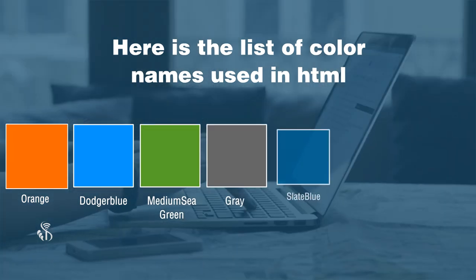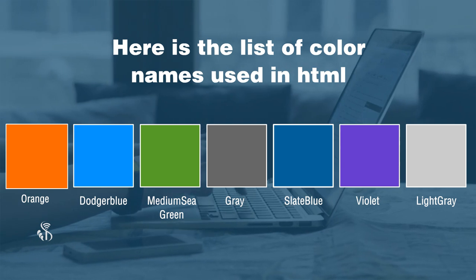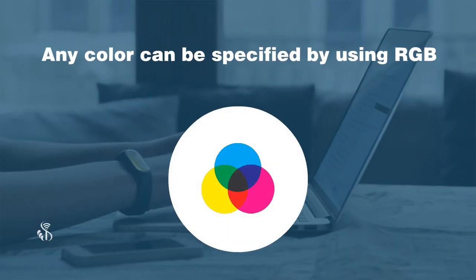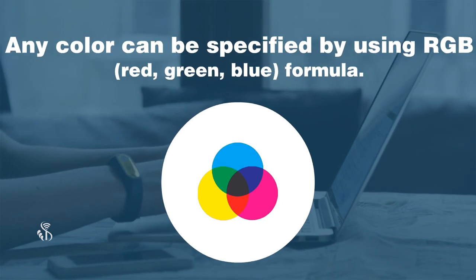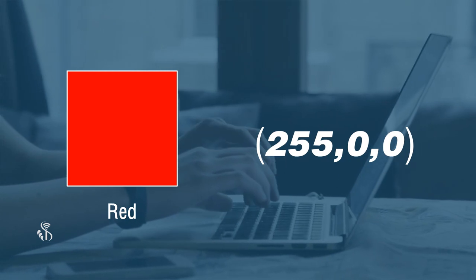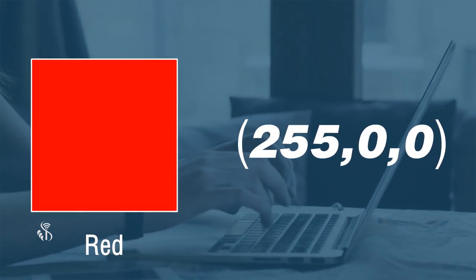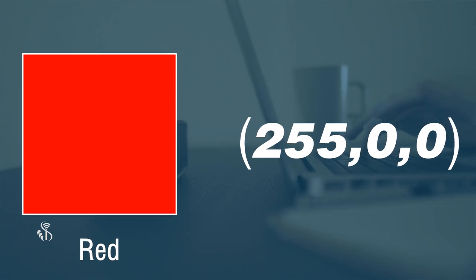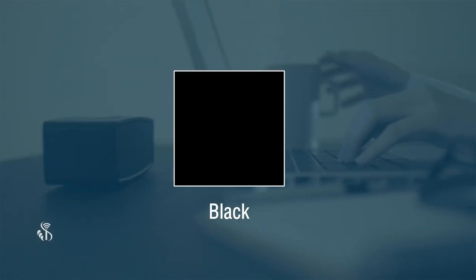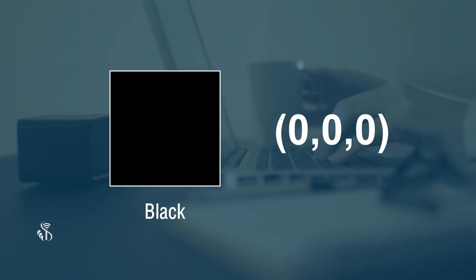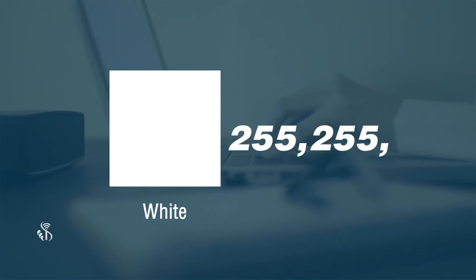Let us understand RGB color coding. Any color can be specified using the RGB — red, green, blue — formula. For example, red is 255, 0, 0. The scale of 0 to 255 defines the intensity of each color. Black color would be 0, 0, 0 and white color would be 255, 255, 255.